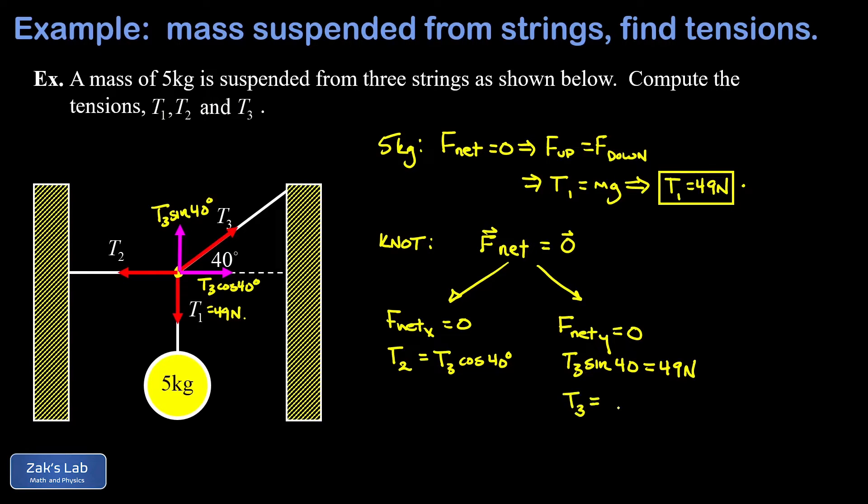This gives us 76.2 newtons for the tension in string three. Now all we have to do is plug that number into the x equation, and I get T2 is equal to 76.2 times the cosine of 40. When I run the numbers on this I get 58.4 newtons. So that wraps up the problem because we have T1, T2, and T3.